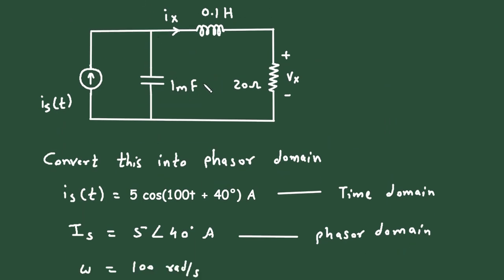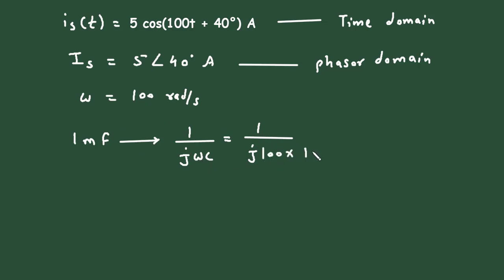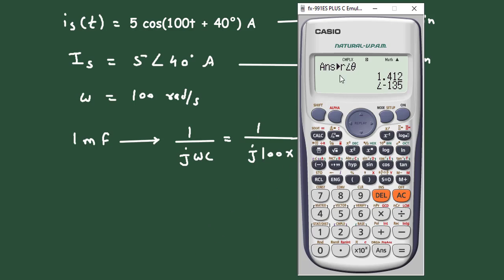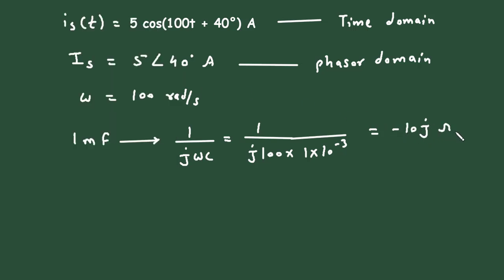Now the 1 millifarad capacitor will change to phasor domain. Its impedance is 1/(jωC) = 1/(j × 100 × 1×10⁻³) = -10j ohm.